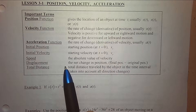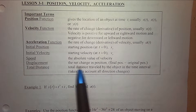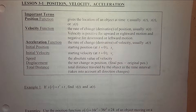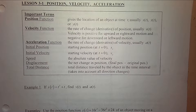The net change — displacement — is the net change in position: where did you start and where did you end, just subtracting those. Total distance is the distance you went in each direction as positive numbers. Do those terms feel familiar to you?